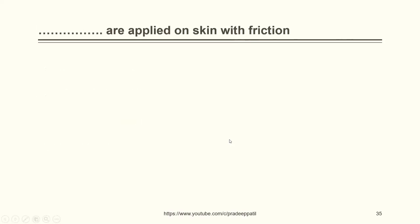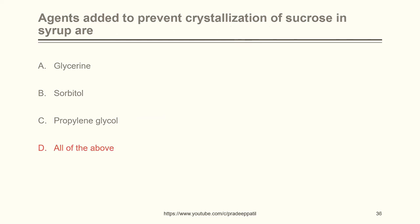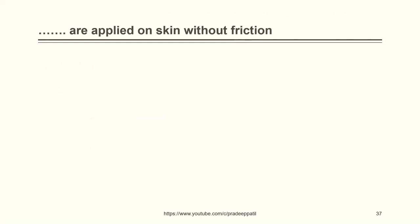Dash are applied on skin with friction: lotion, liniment, gargles, or creams. The correct answer is liniments. Agents added to prevent crystallization of sucrose in syrup are: glycerine, sorbitol, propylene glycol, or all of the above. The correct answer is all of the above. Dash are applied on skin without friction: lotion, liniment, gargle, or throat paint. The answer is lotion.